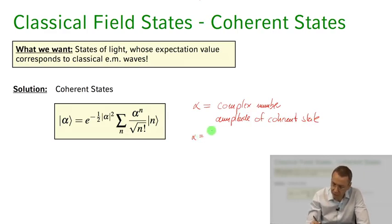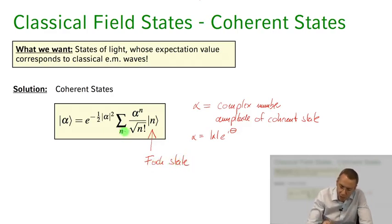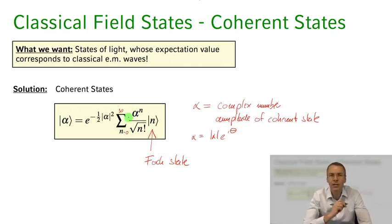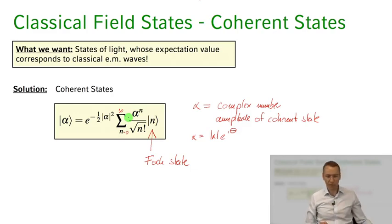We write α = |α| · e^(iθ), and the coherent state is a superposition of different Fock states — states with a defined photon number — summed over n from zero to infinity, with weight factors given by the complex amplitude α. We'll interpret what this means for the photon number probability distribution shortly. These coherent states reproduce the classical oscillating electromagnetic field that we know from Maxwell's equations.